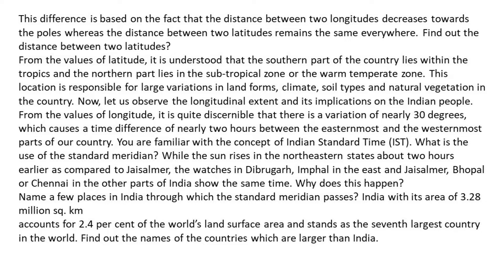Find out the distance between two latitudes. From the values of latitude, it is understood that the southern part of the country lies within the tropics and the northern part lies in the subtropical zone or the warm-temperate zone. This location is responsible for large variations in landforms, climate, soil types and natural vegetation in the country.